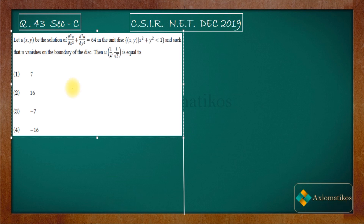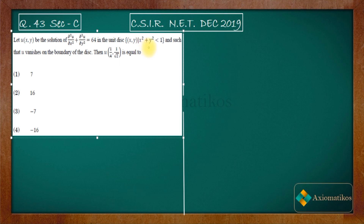Let u(x,y) be the solution of this partial differential equation in the unit disc. We are told that u(x,y) represents the solution in the unit disc, and the condition given is that u vanishes on the boundary of the disc, which is x² + y² = 1.